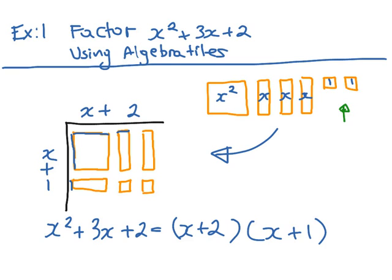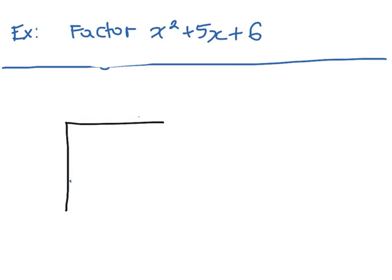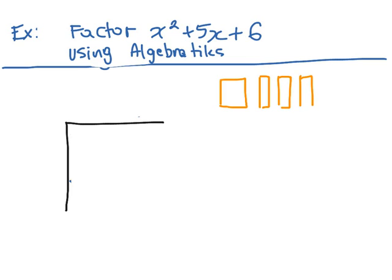Let's take a look at a different example. In this case, we're going to factor x squared plus 5x plus 6 using algebra tiles. So again, let's draw our tiles. We have 1 x squared, so that means it's 1 big square, plus 5 long rectangles. And 1, 2, 3, 4, 5, and 6 little squares.